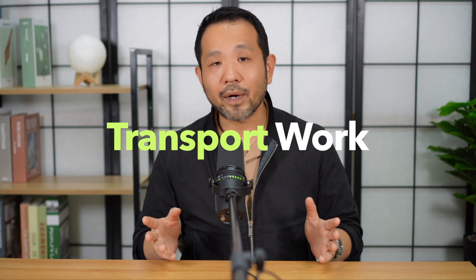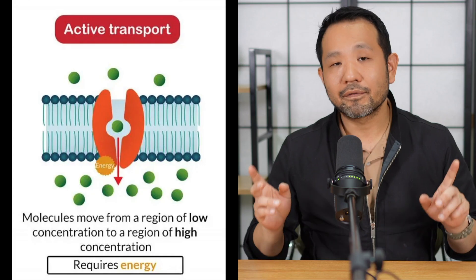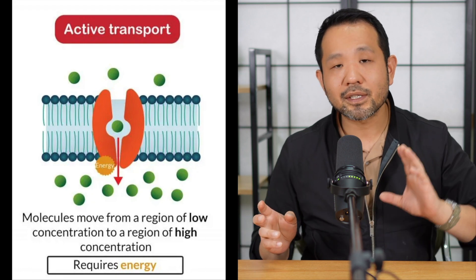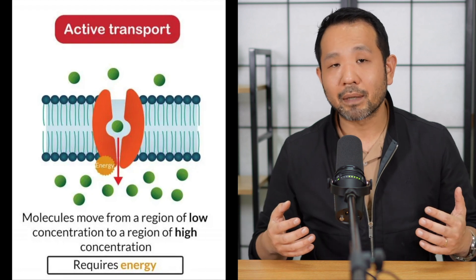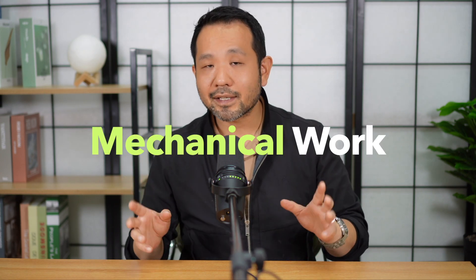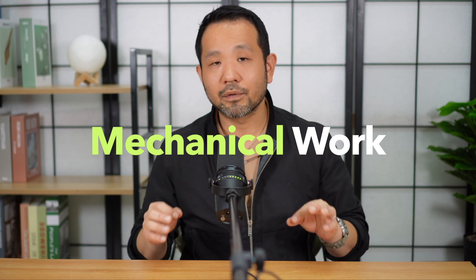The second type of work is transport work, which deals with movement of materials in and out of the cell. Specifically, the movements that require energy are forms of active transport — pushing protons out through proton pumps, or moving sodium out and potassium in through the sodium-potassium pump, as discussed in chapter 7. All of those processes require ATP. The third type of work cells must perform is mechanical work — simply the physical movements that cells have to make.